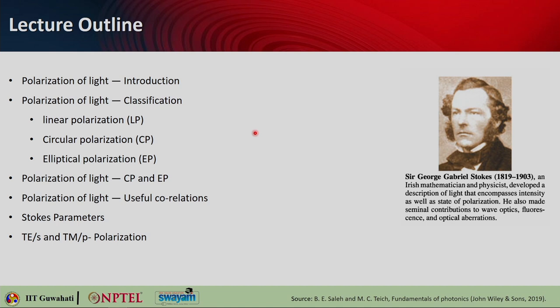We will first introduce what we mean by polarization of light and then go into the classification. Light can be classified into linear polarization, circular polarization, or elliptical polarization. We will look into more details of elliptical polarization and circular polarization, and see the useful correlations between different polarization states. After that, we will study the Stokes parameters and introduce the concept of TE or S polarization and TM or P polarization.